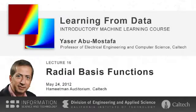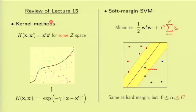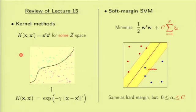Welcome back. Last time we talked about kernel methods, which is a generalization of the basic SVM algorithm to accommodate feature spaces Z which are possibly infinite and which we don't have to explicitly know or transform our inputs to, in order to be able to carry out the support vector machinery.